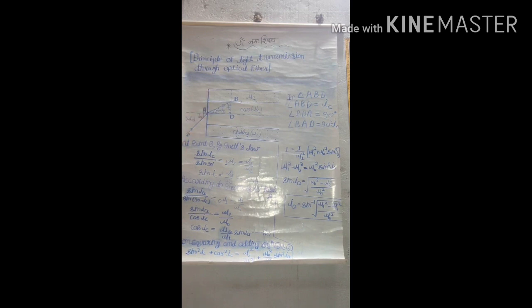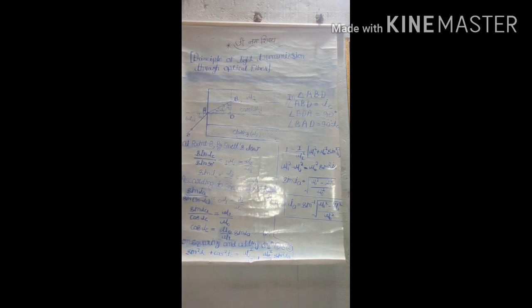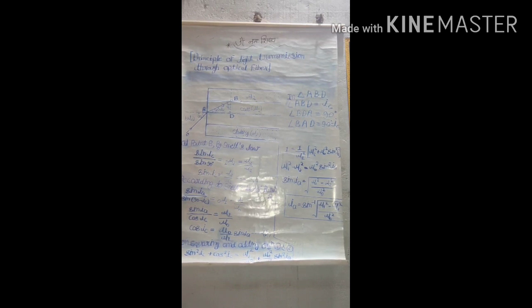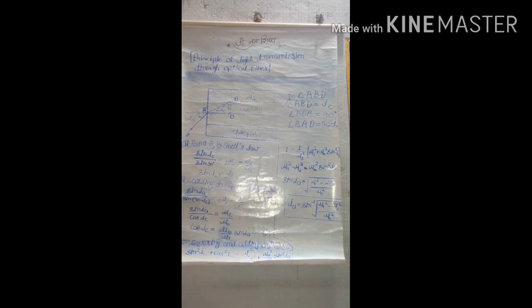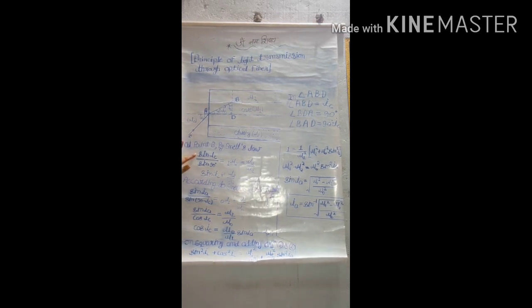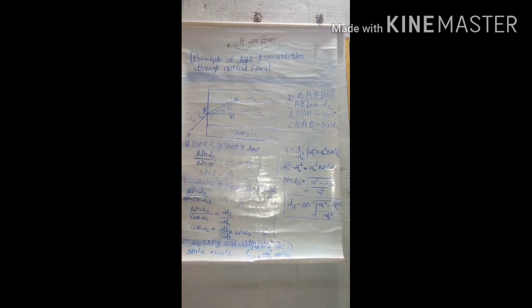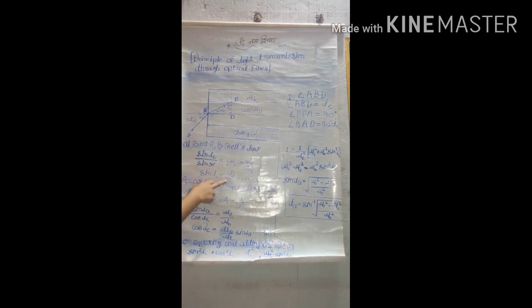Now by Snell's law at point B, you have to know what is Snell's law. Snell's law states that the ratio of sines of incident angle and refraction angle is a constant that is known as refractive index of first medium with respect to second medium. So here, sin IC upon sin 90 degrees equals 1-mu-2, and we can write 1-mu-2 as mu2 upon mu1. We all know that the value of sin 90 degrees is 1, so here we get sin IC equals mu2 upon mu1. This is equation 1.